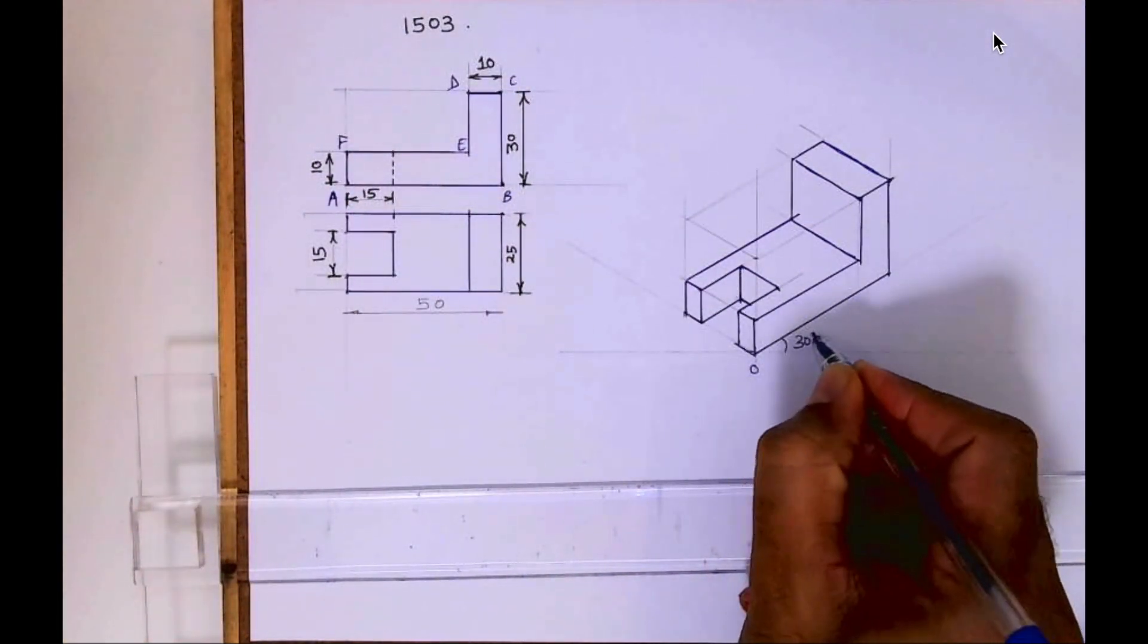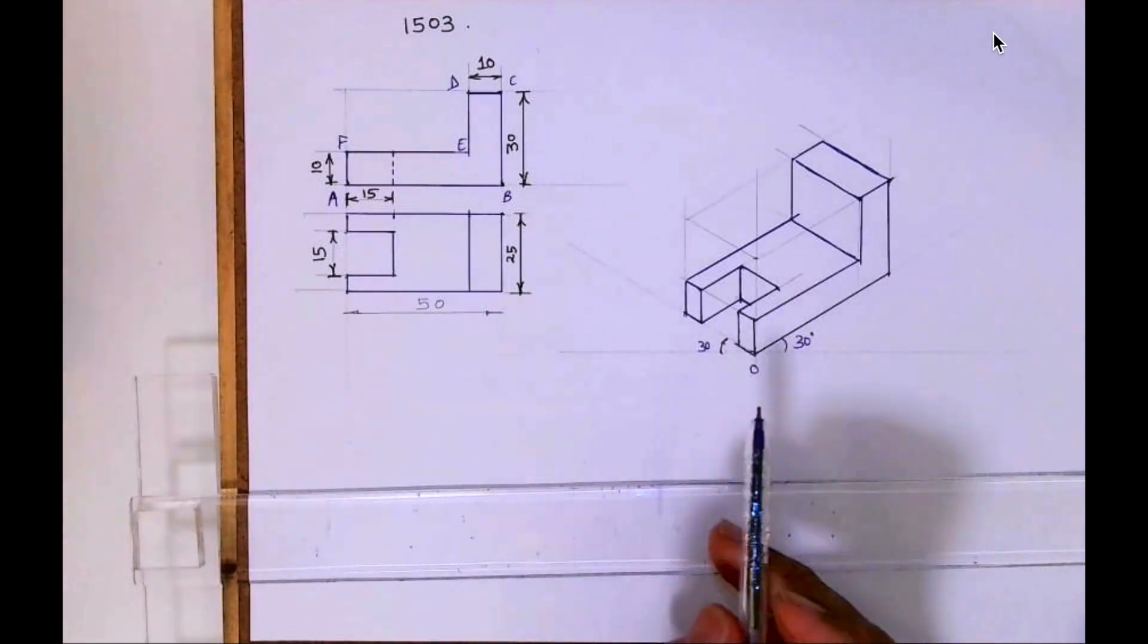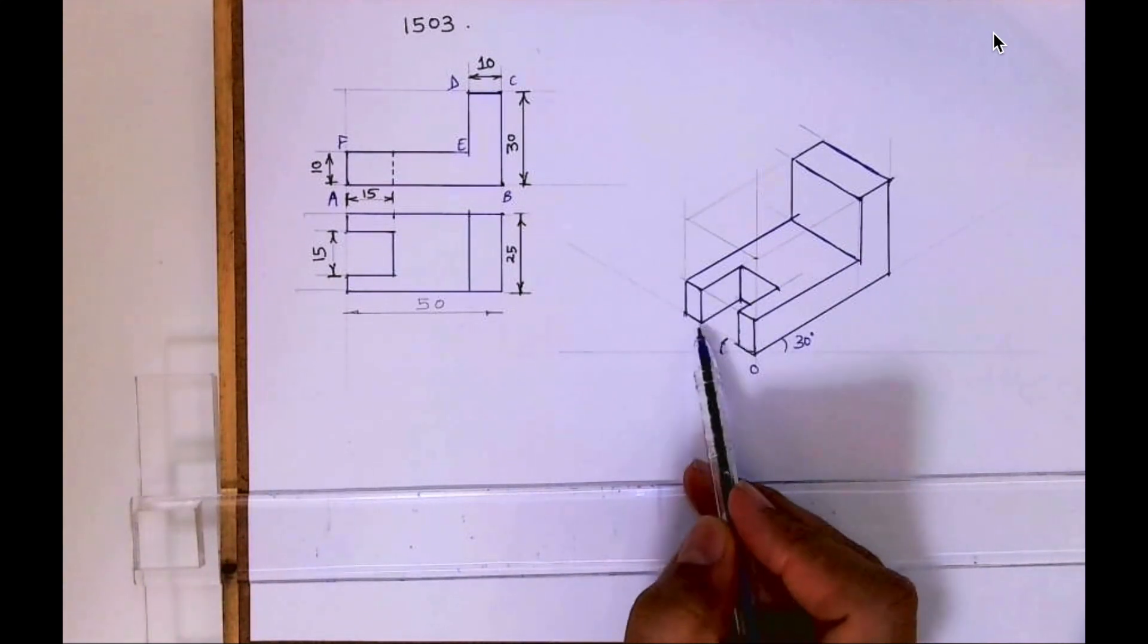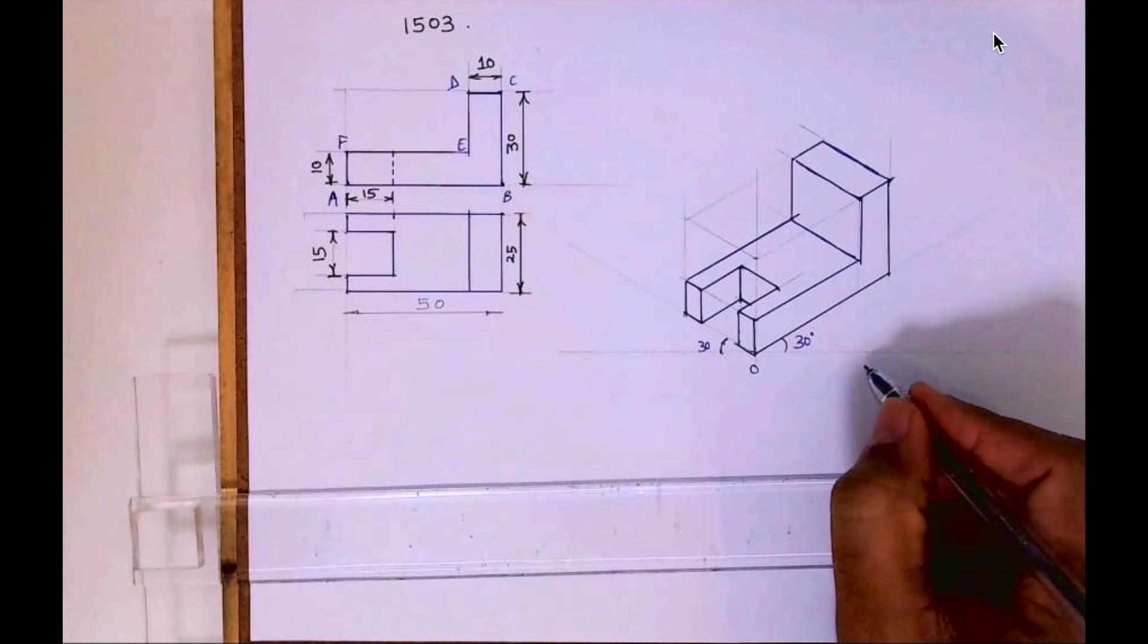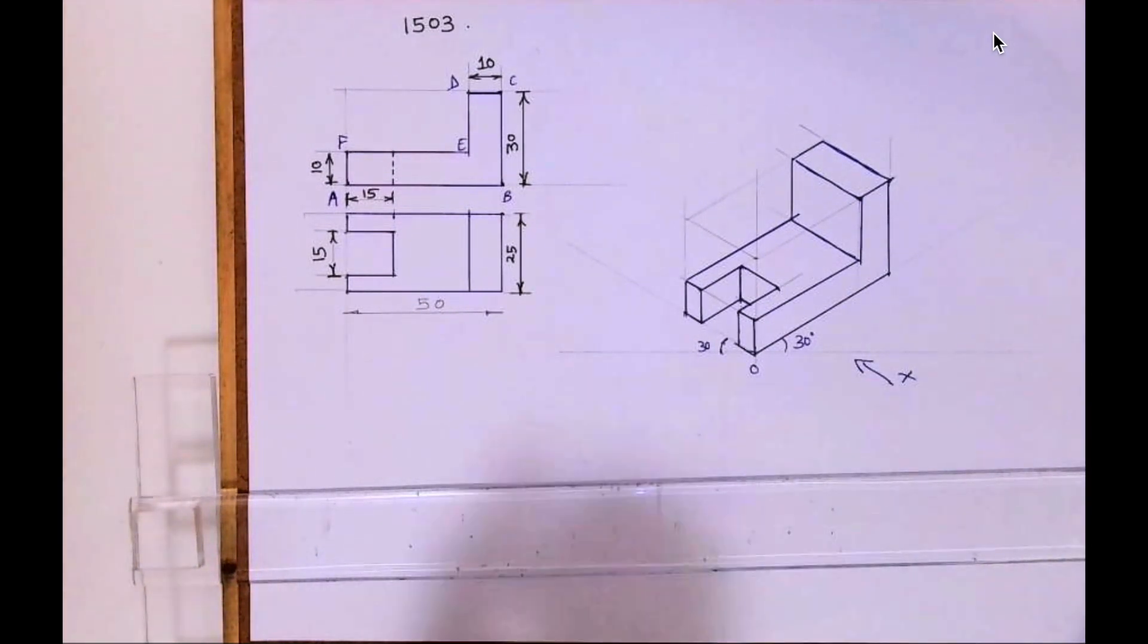This is the origin, these are 30-degree angles. Now this dotted line is this line—see, which you can't see, right? This part. The front view is from here, we are seeing it from this direction. So I hope you have understood the problem. Thank you.